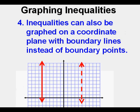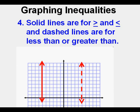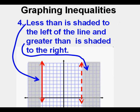Inequalities can also be graphed on a coordinate plane with boundary lines instead of boundary points. Solid lines are for greater than or equal to and less than or equal to; dashed lines are for less than or greater than. Less than is shaded to the left of the line and greater than is shaded to the right.